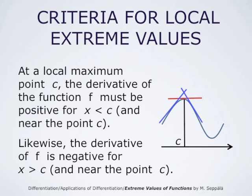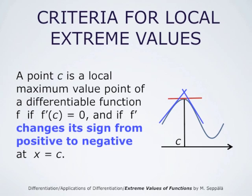These observations can be summarized: a point c is a local maximum value point of a differentiable function f if f' at c is 0 and if f' changes its sign from positive to negative at x equals c.